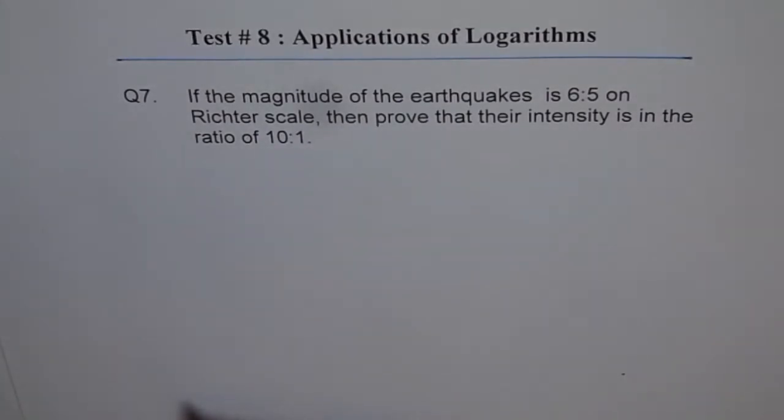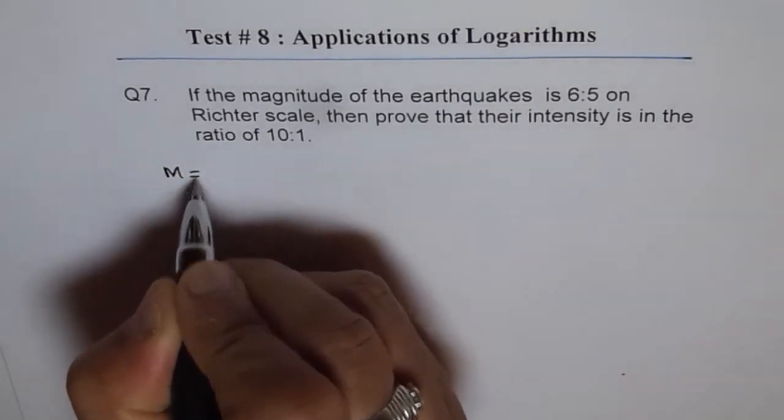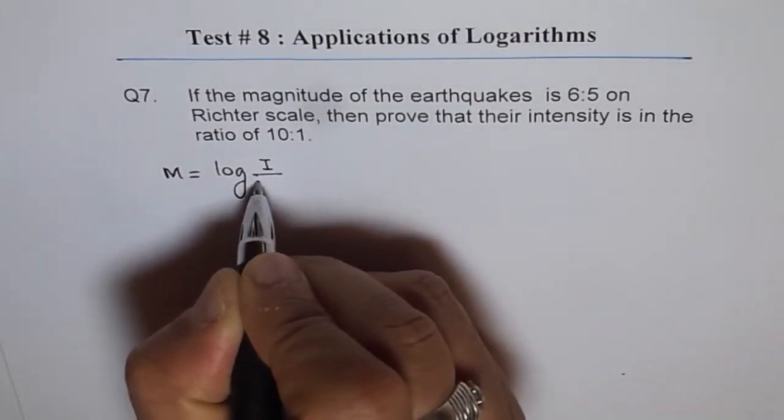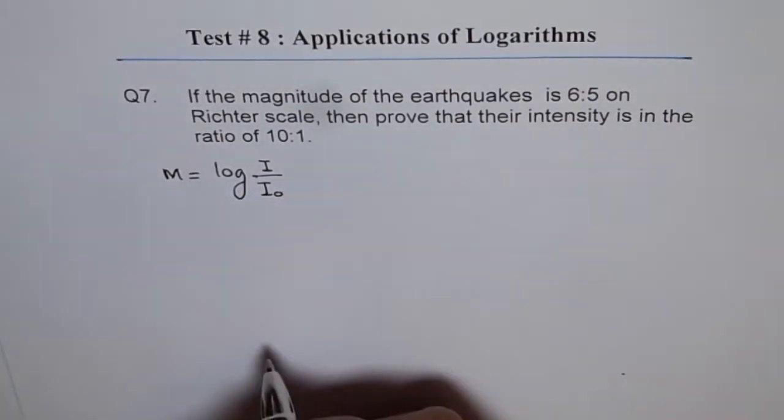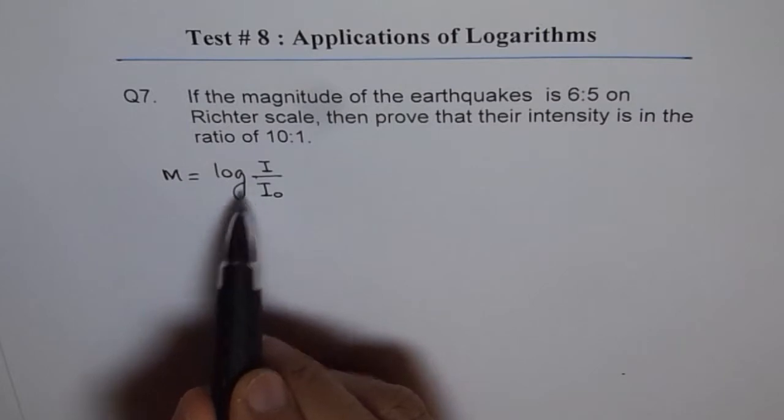I will rearrange this formula of earthquake magnitude given in Richter scale and then show you how to do this question. We write magnitude of earthquake M as equals to log of intensity over standard intensity I₀. Now, we can actually rearrange this formula. This is log to the base of 10.